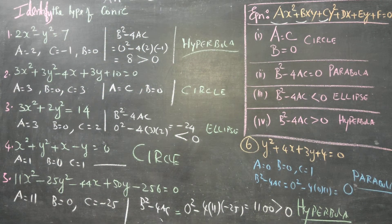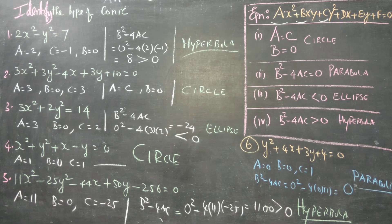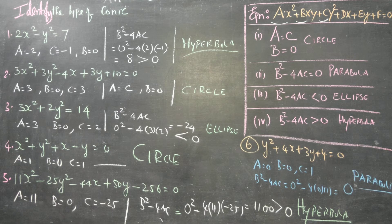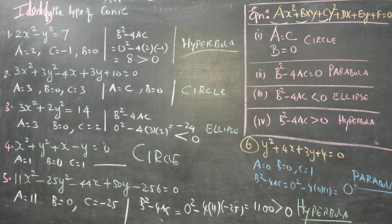To summarize: to identify a conic, use the general form ax squared plus bxy plus cy squared plus dx plus ey plus f equals 0. Here a is the coefficient of x squared, c is the coefficient of y squared, and b is the coefficient of xy. The conditions are: a equals c and b equals 0 means circle; b squared minus 4ac equals 0 means parabola; b squared minus 4ac less than 0 means ellipse; and b squared minus 4ac greater than 0 means hyperbola. Thank you.